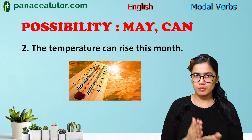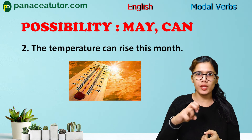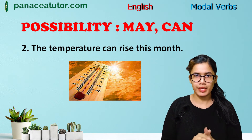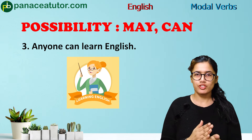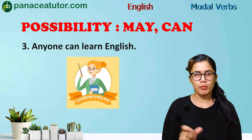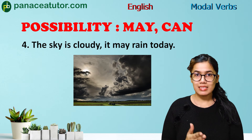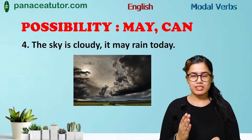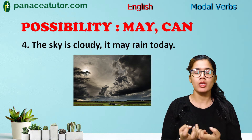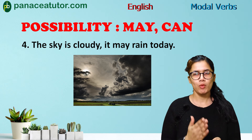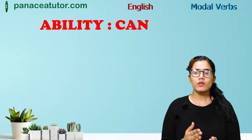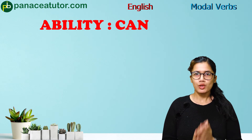Examples of possibility: 'The temperature can rise this month' — it is universally applicable, so we use can. 'Anyone can learn English' — universally applicable, so we use can. 'Rahul is good at studies, he may qualify the exam' — strong possibility, so we use may. 'The sky is cloudy, it may rain today' — strong possibility, so we use may.